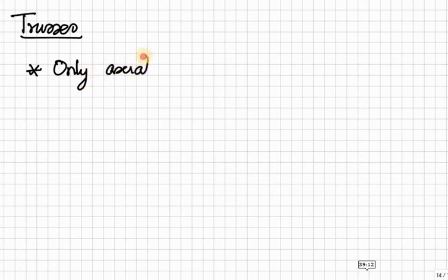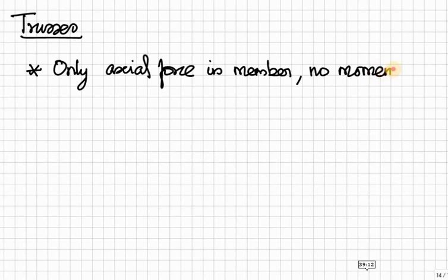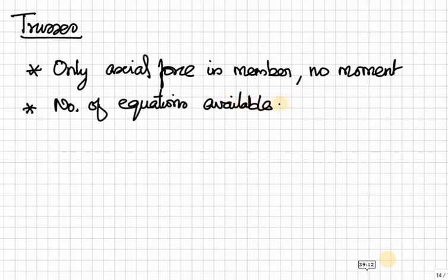So, at each joint, we have only two equations to be solved. And in members, we have only axial forces. Therefore, number of equations available at each joint is equal to 2 for 2D planar truss and 3 for the space or 3D trusses.